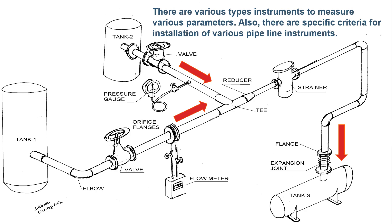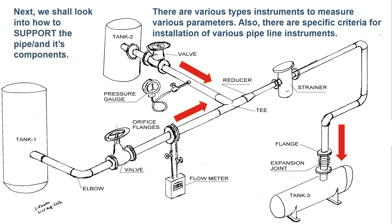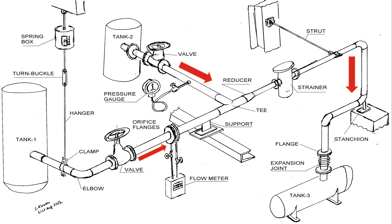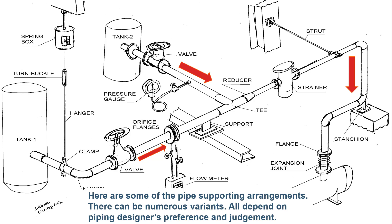Now we have a complete system. But our entire piping system is in the air — let's provide some support. Here are some pipe support arrangements; there can be numerous variants, all depending on the piping designer's preference and judgement. Some of the supports shown are trunnion type, saddle type, spring support, clamp support, and hanger type support.